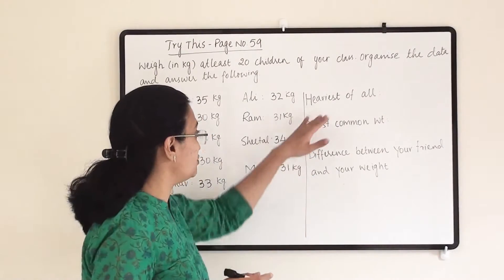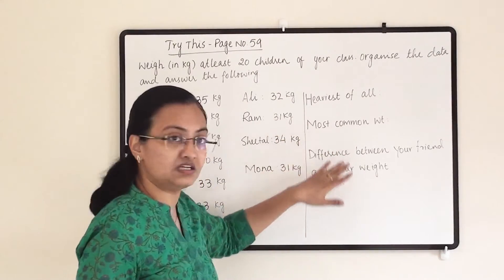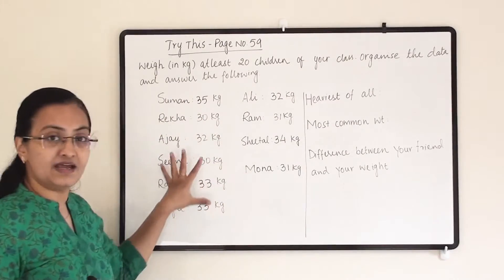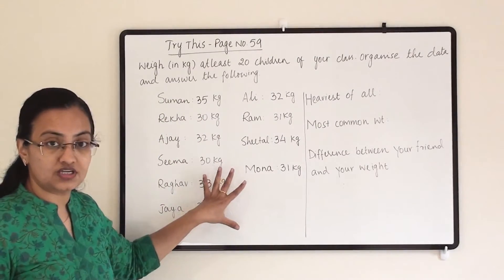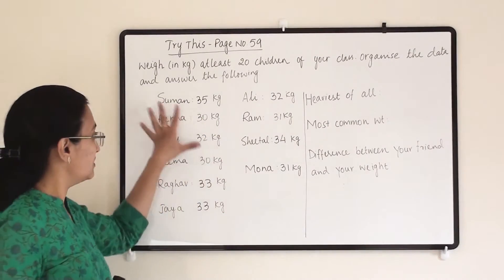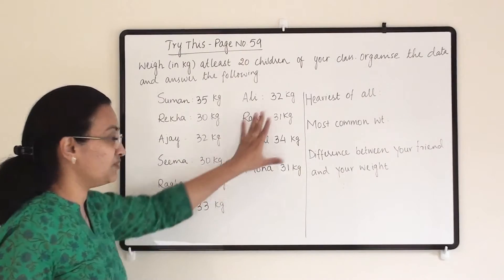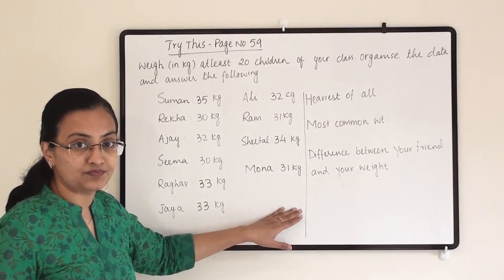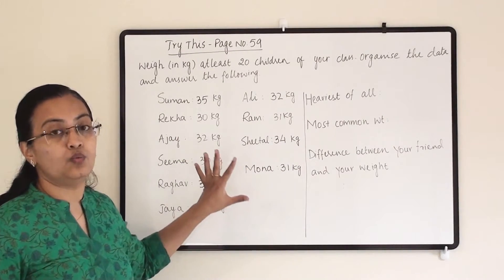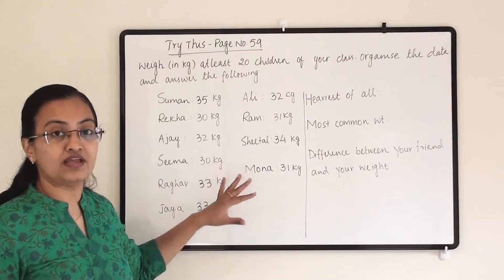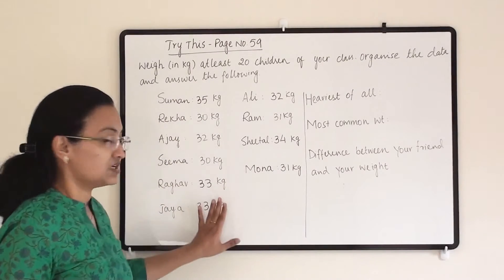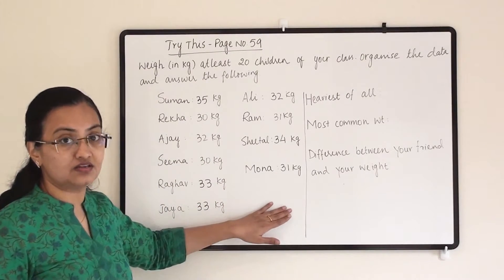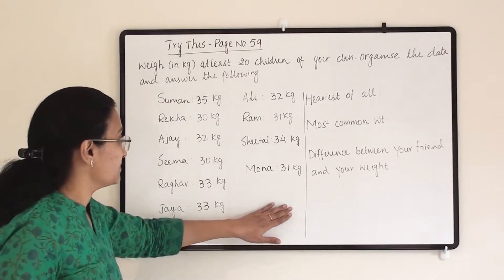After that we need to answer these 3 simple questions. I have noted down 10 observations here with random names and some weights. This weight will vary accordingly, so I have just randomly written the data and weights here.